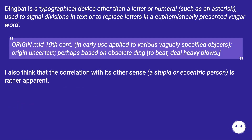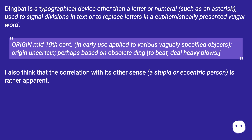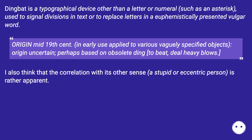Dingbat is a typographical device other than a letter or numeral, such as an asterisk, used to signal divisions in text or to replace letters in a euphemistically presented vulgar word. Origin: mid-nineteenth century; in early use applied to various vaguely specified objects. Origin uncertain, perhaps based on obsolete 'ding,' meaning to beat or deal heavy blows.